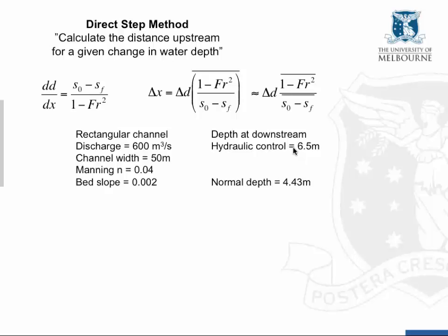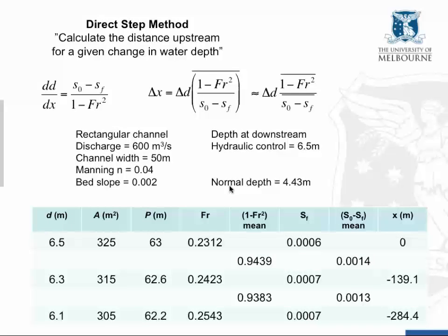So we have a classic M1 profile under subcritical flow conditions. As we move upstream, the depth will decrease towards the normal depth. This is the solution process for calculating that profile.